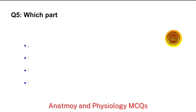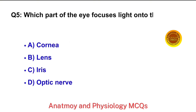Question No. 5. Which part of the eye focuses light onto the retina? The right answer is option B: Lens.